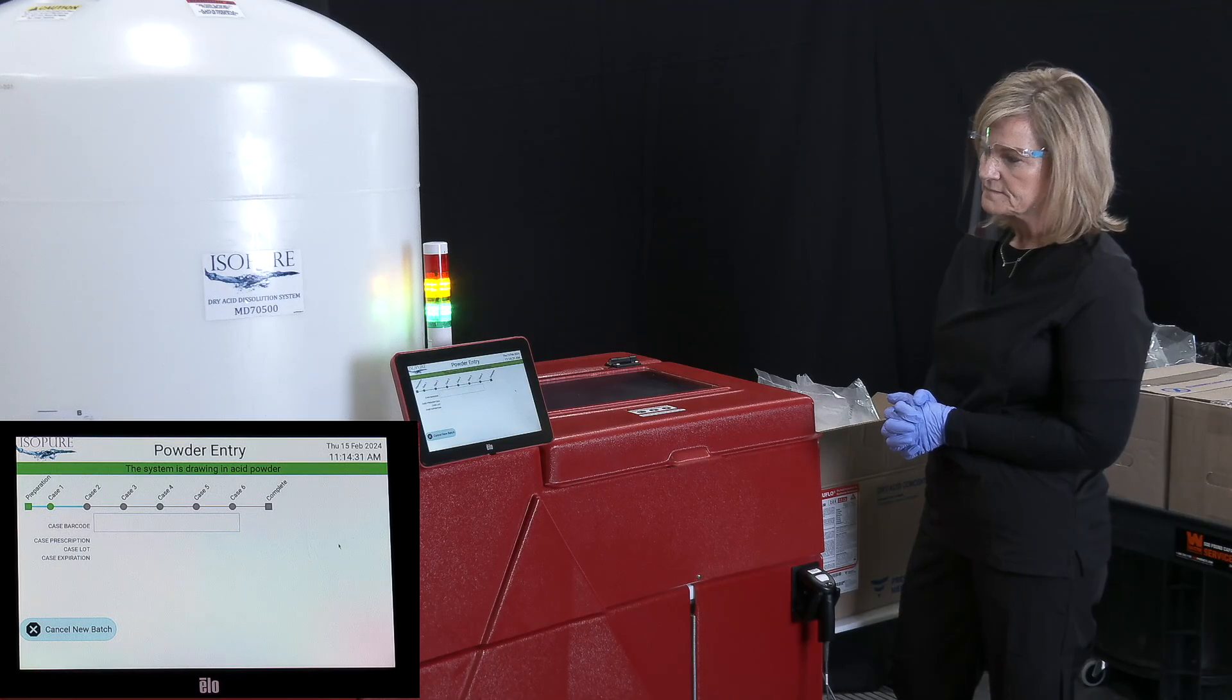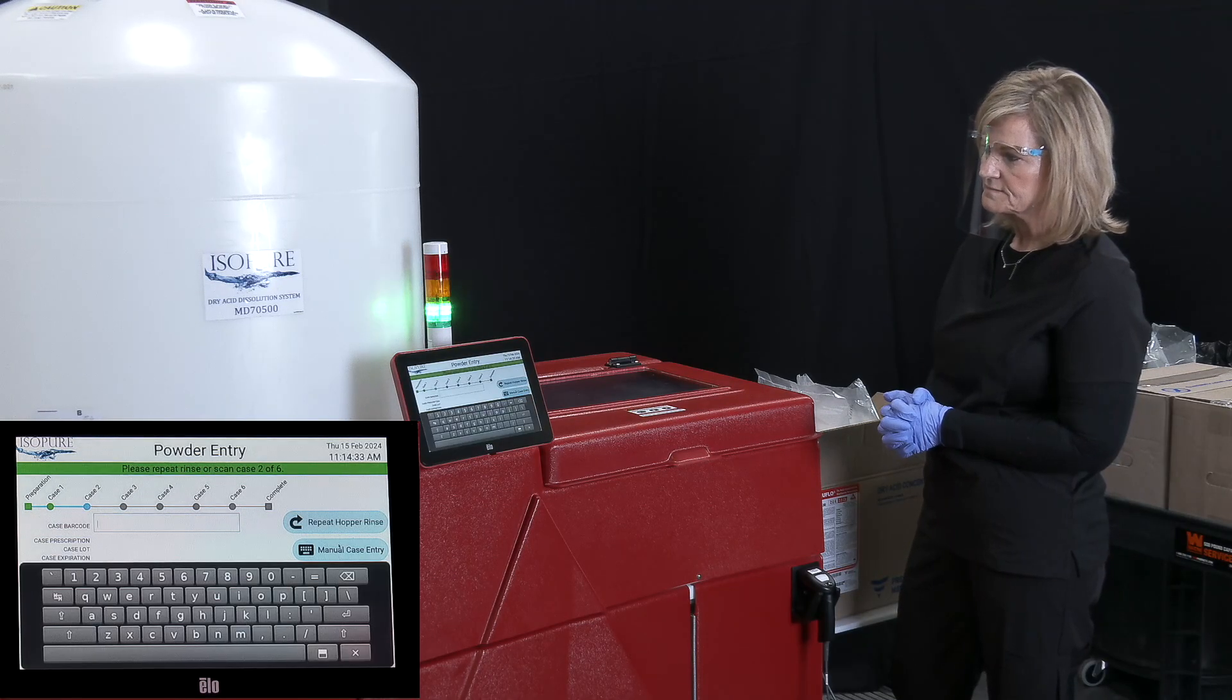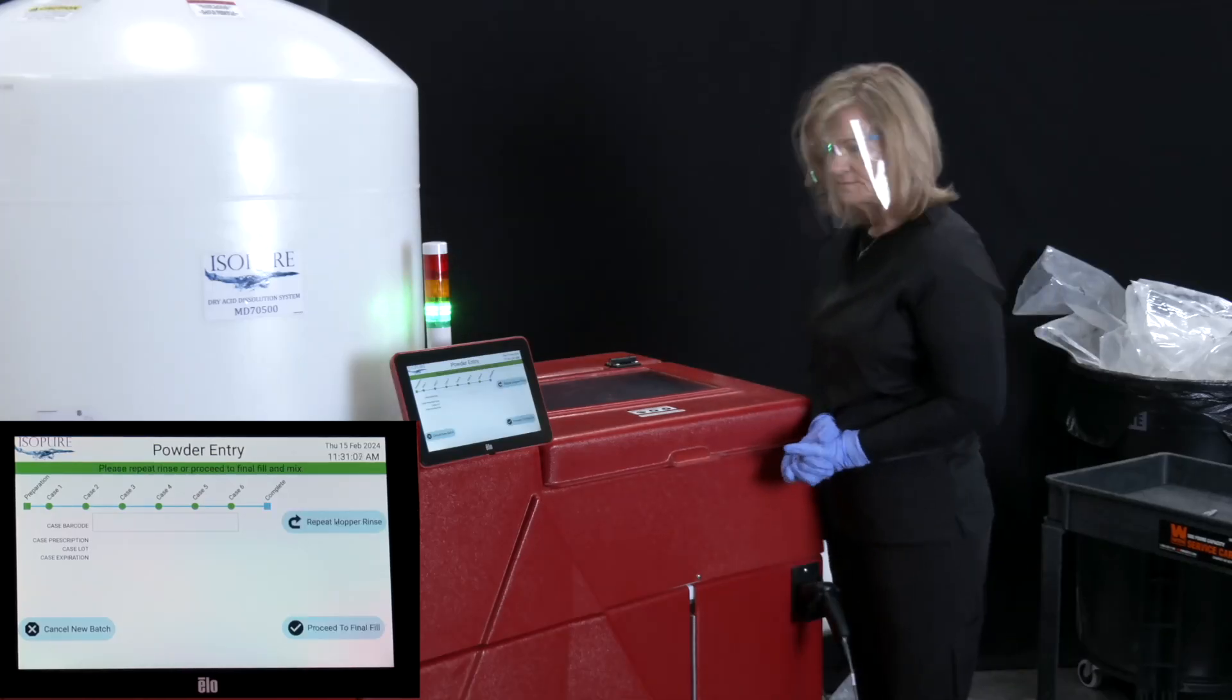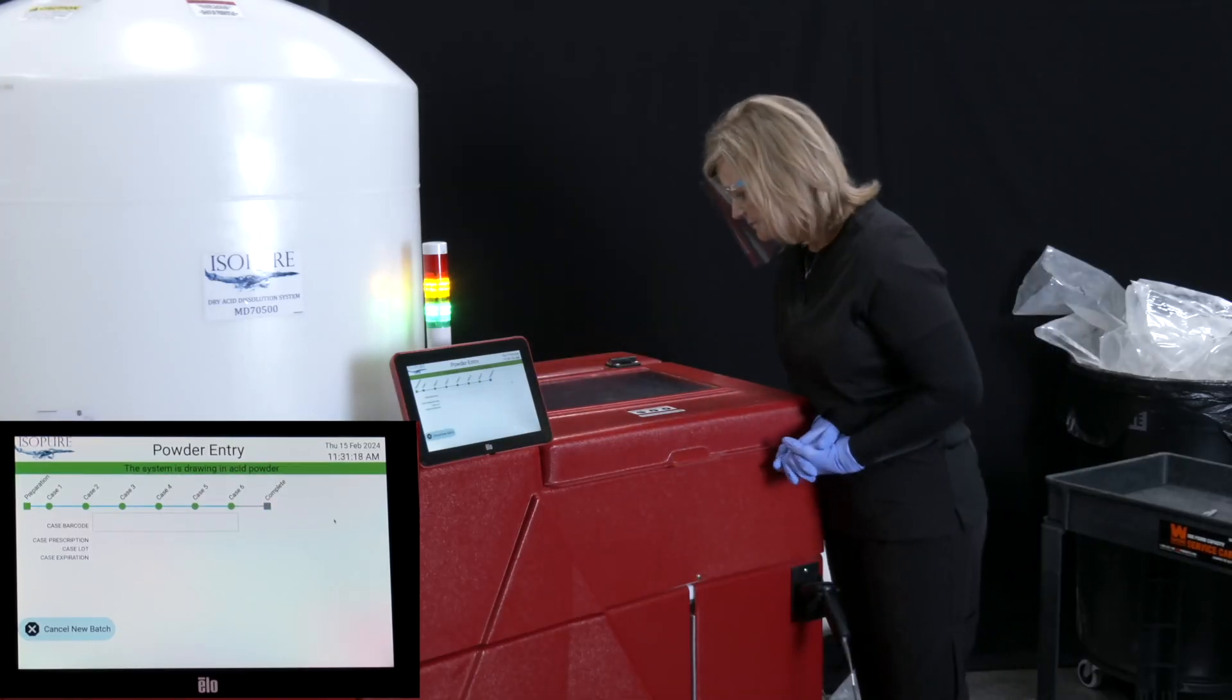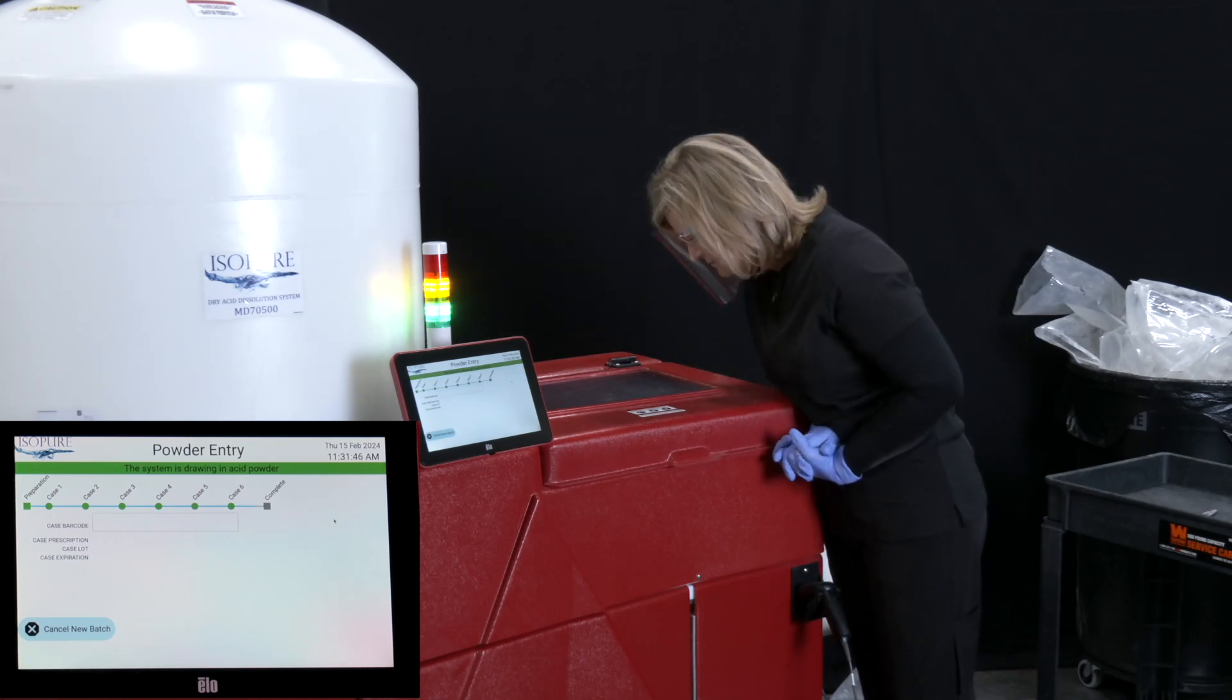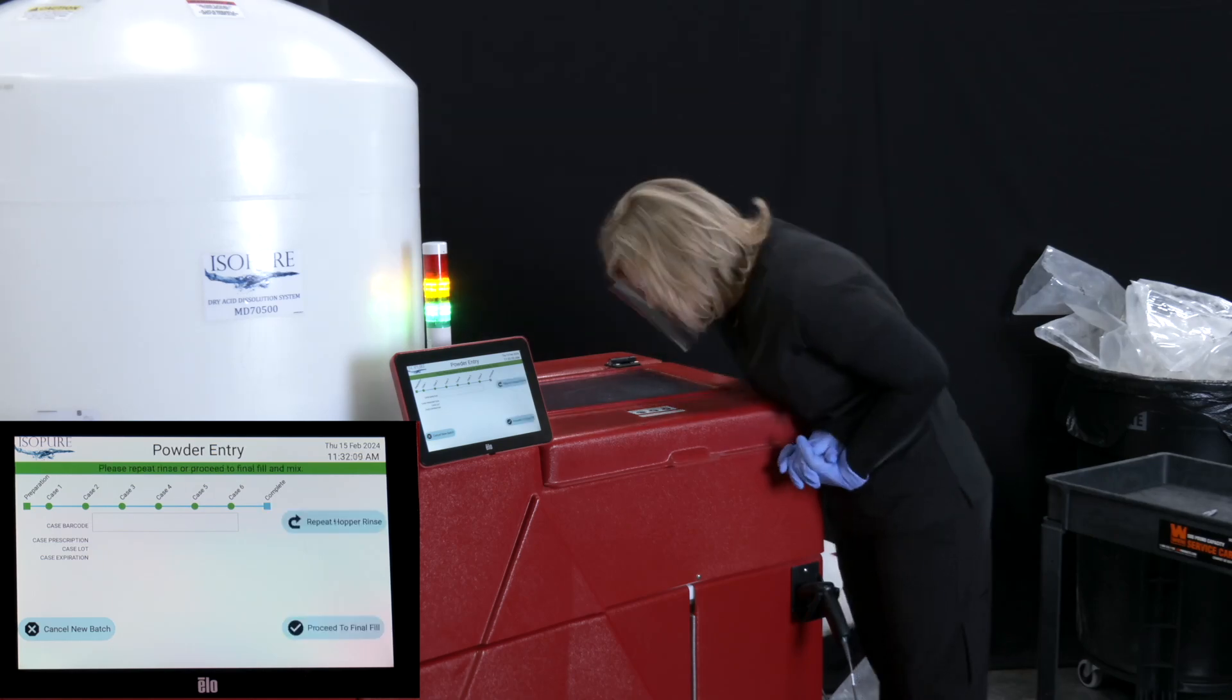After each hopper rinse, the Acumix will prompt the operator to either repeat the rinse or confirm the hopper is empty. At this point, the operator should look inside the hopper to ensure that no powder has been left. Residual acid left in the hopper may lead to a failed batch.